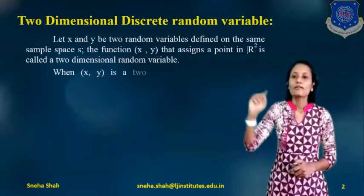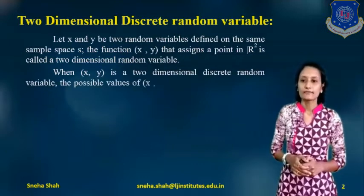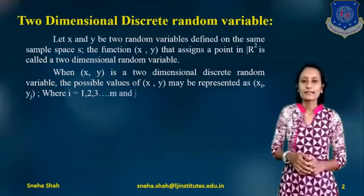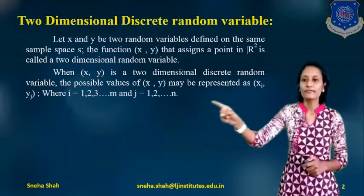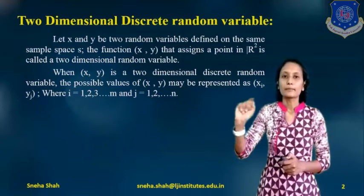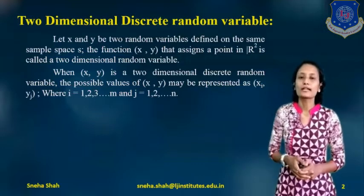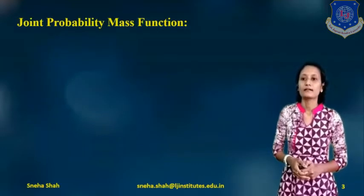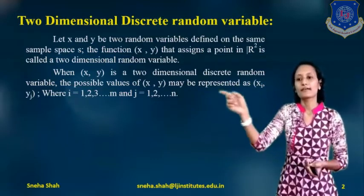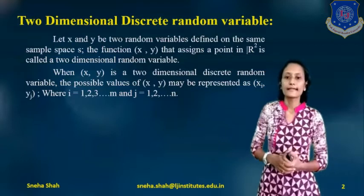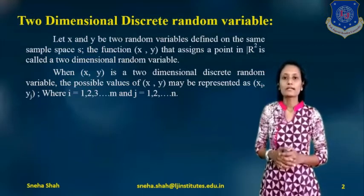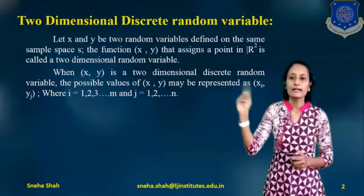When (x, y) is a 2-dimensional discrete random variable, the possible values of x and y may be represented as (xi, yj), where i equals 1, 2, 3 up to n and j equals 1, 2, 3 up to n. The value of x may be different from the value of y, so we are taking different values of i and j. In general, it will be represented as xi and yj.